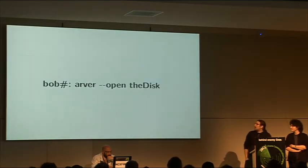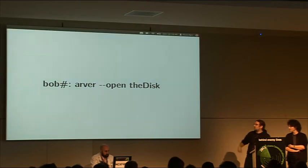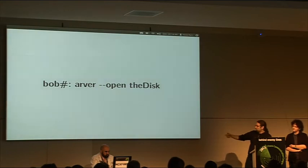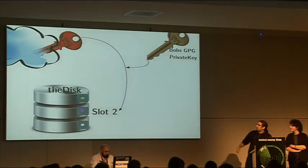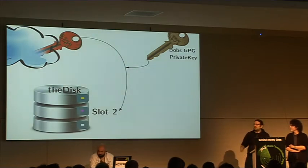Then Bob can just type that he wants to open that disk, and if the disk was closed, Arbor will take the encrypted file, decrypt it with his private key, send the key to the slot, and open the disk.